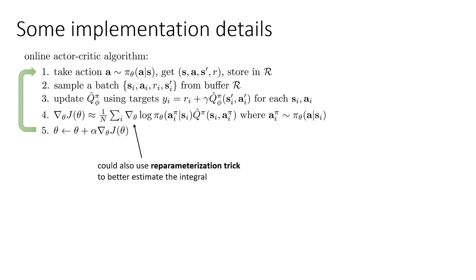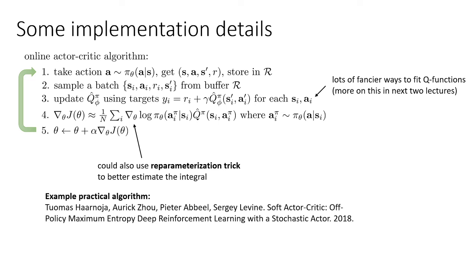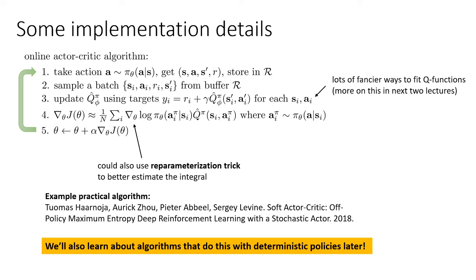A few practical details: if you read some papers that implement this procedure, one thing you'll notice is that oftentimes there are much fancier things we can do for step four. For example, one thing we could use is something called the reparametrization trick, which I'll discuss in the second half of the course. There are also many fancier ways to fit the Q function, which we'll discuss in the next two lectures when we talk about Q learning. If you want an example of a practical algorithm that builds on this idea, check out the algorithm called soft actor-critic — this is actually one of the most widely used actor-critic methods today. Although the online value-based actor-critic methods are more classical, the off-policy Q value-based actor-critic methods are more commonly used. We'll also learn about algorithms that do this with deterministic policies later, and when we talk about Q learning we'll revisit off-policy actor-critic methods with deterministic actors.